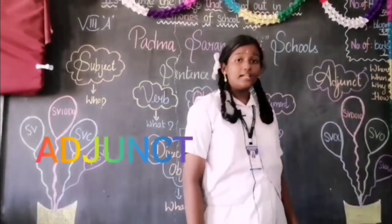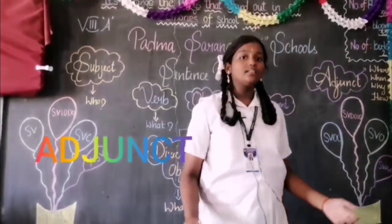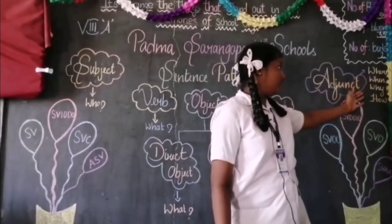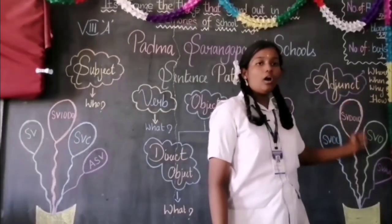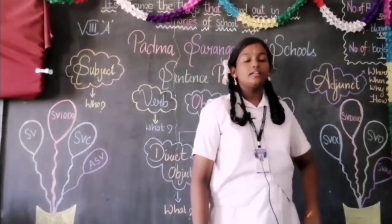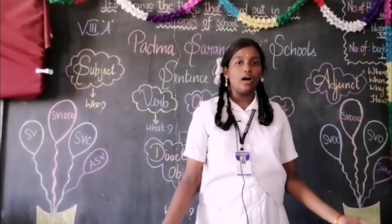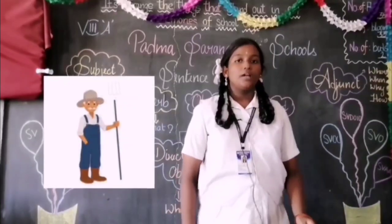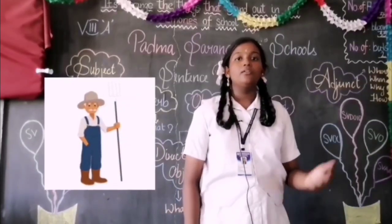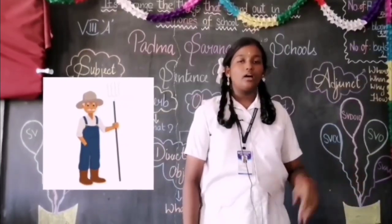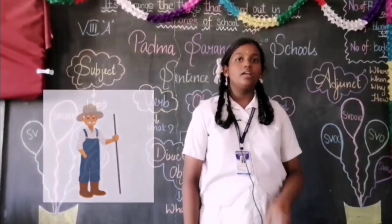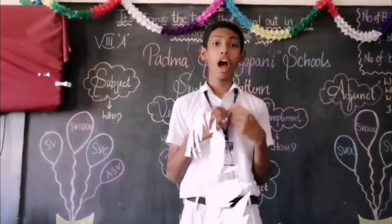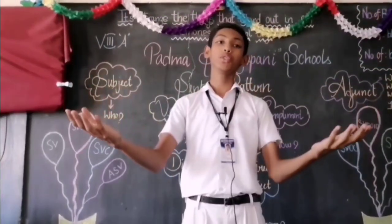Adjunct: to get the adjunct, ask the questions WHERE, WHEN, WHILE, or HOW. Example: my father is a farmer in Tiruwarur. My father is a farmer WHERE? In Tiruwarur. 'In Tiruwarur' is an adjunct. I hope you all understood and will not find any difficulties in finding out sentence patterns.